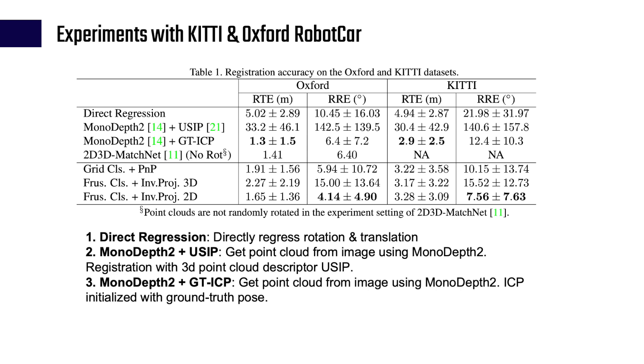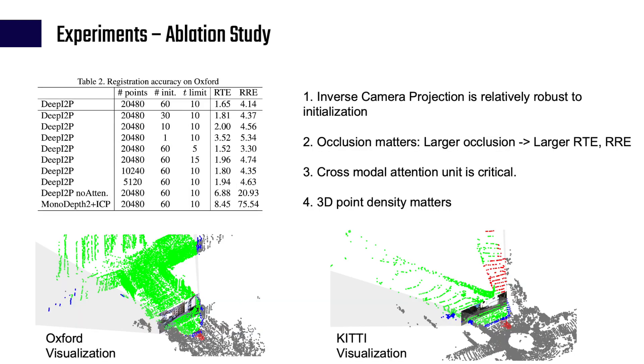We perform experiments on Oxford RobotCar and KITTI datasets. We compare our results with the existing work 2D-3D MatchNet and some other baselines using state-of-the-art approaches. Ablation studies are presented to verify our design choices.